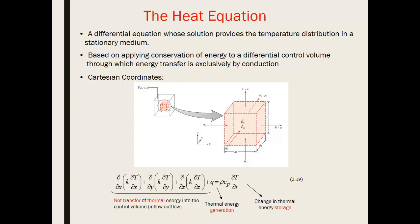The heat equation is derived by applying conservation of energy to a differential control volume. You define a control volume and do an energy balance over it. In Cartesian coordinates, energy flows in and out in the x, y, and z directions, giving rise to each of those individual terms. You can also have a volumetric generation term, and ultimately: in minus out plus generation equals accumulation.